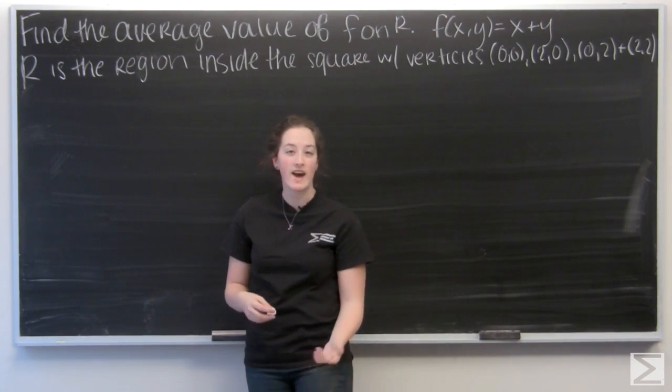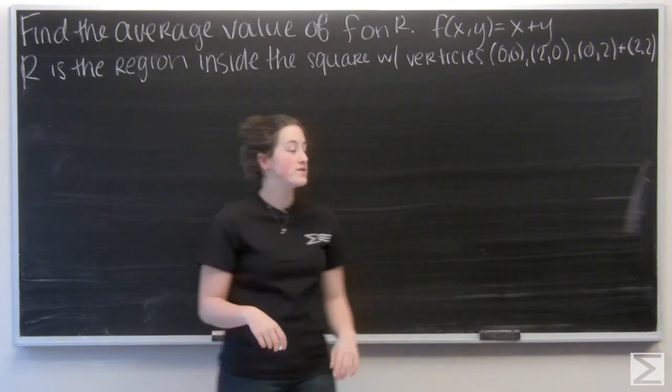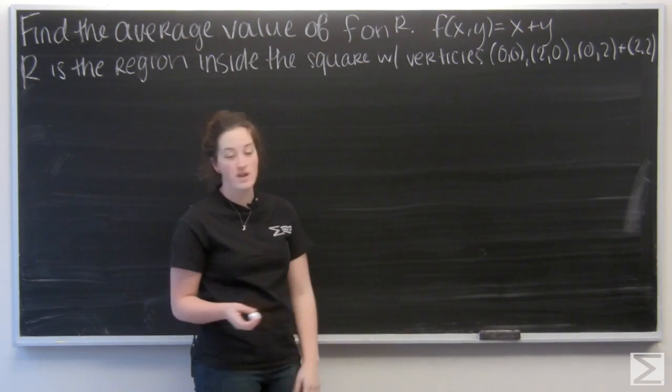So for this problem, we're working on average value over a region in the xy plane. Here, we're given a square and vertices of it.